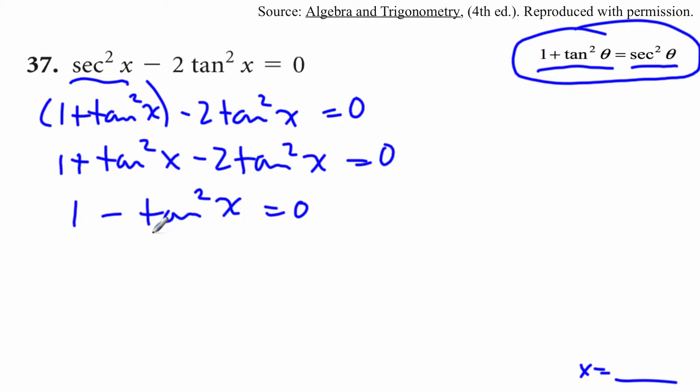Now, I want to isolate the trig ratio. So since it's negative, let's just push it to the other side. So I'll get 1 is equal to positive tan squared x.